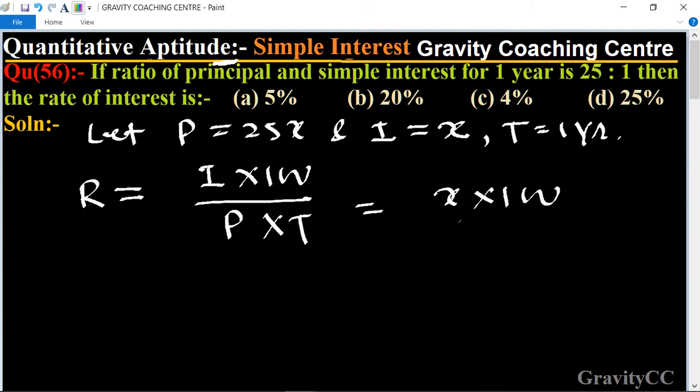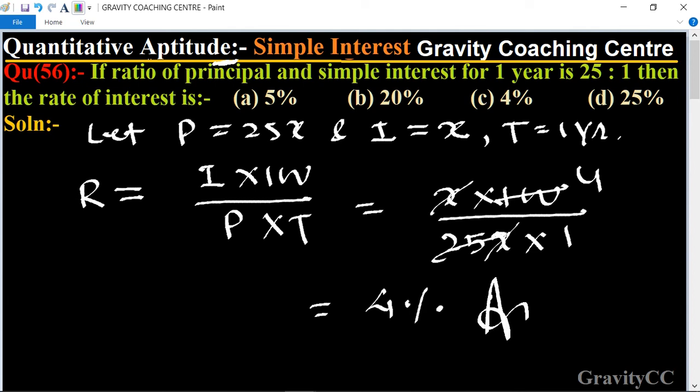So it is equal to x times 100 upon principal 25x and 1. X and x cancel, and 25 goes into 100, so it is equal to 4 percent. This is the required answer, so option C is the correct answer.